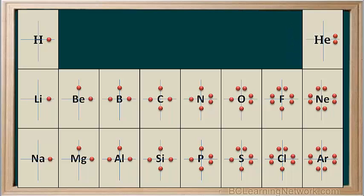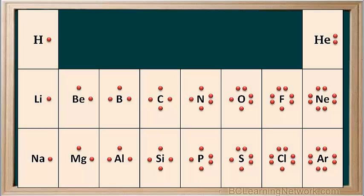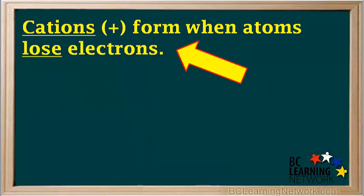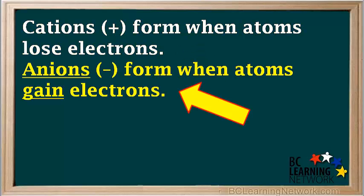We can now use this table as a guide for writing Lewis diagrams for any elements we need. These diagrams of individual atoms will be very useful when we create Lewis diagrams for ionic and covalent compounds. Now we'll discuss Lewis diagrams for ions. Cations, or positive ions, form when atoms lose electrons. And anions, or negative ions, form when atoms gain electrons.